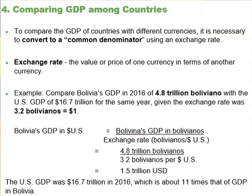We express exchange rates as the units of country A's currency that need to be traded for a single unit of country B's currency. We can use two types of exchange rates: market exchange rates and purchasing power parity, or PPP, equivalent exchange rates. Market exchange rates vary on a day-to-day basis depending on supply and demand in foreign exchange markets. PPP equivalent exchange rates provide a longer-run measure of the exchange rate, and for this reason economists typically use PPP equivalent exchange rates for GDP cross-country comparisons.